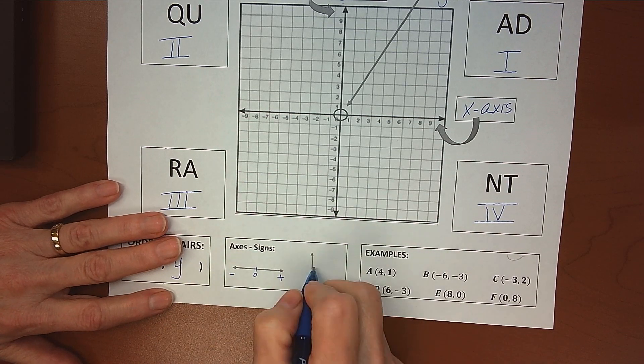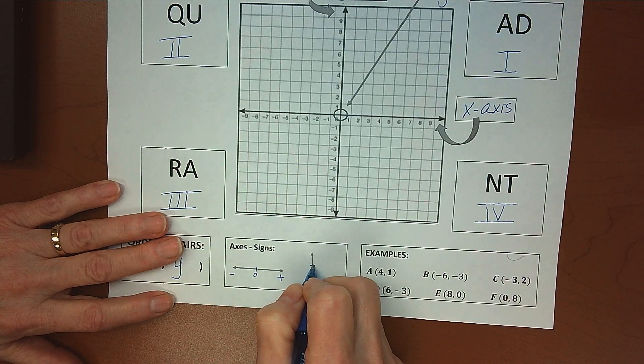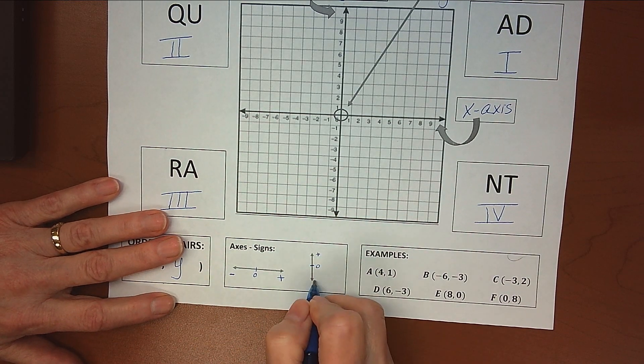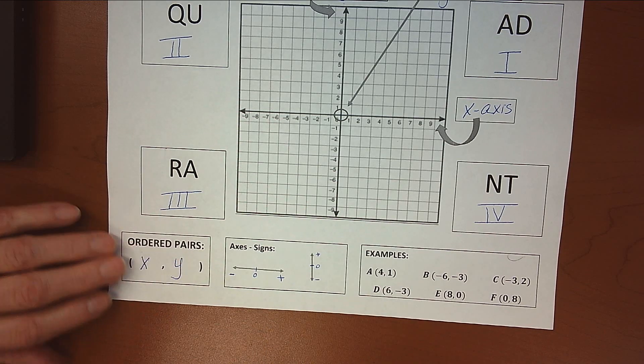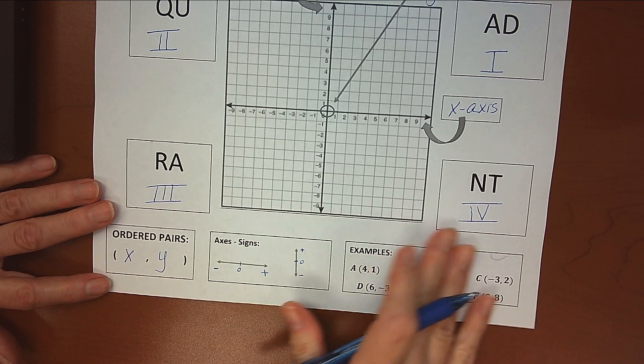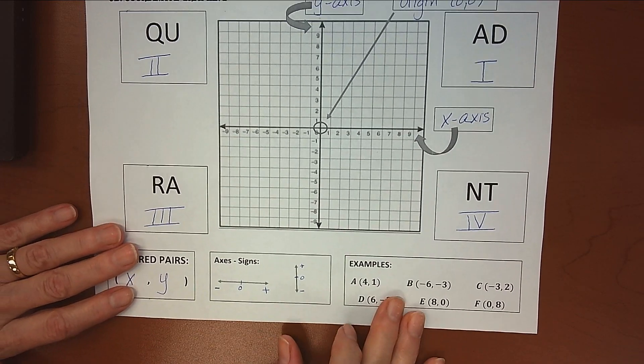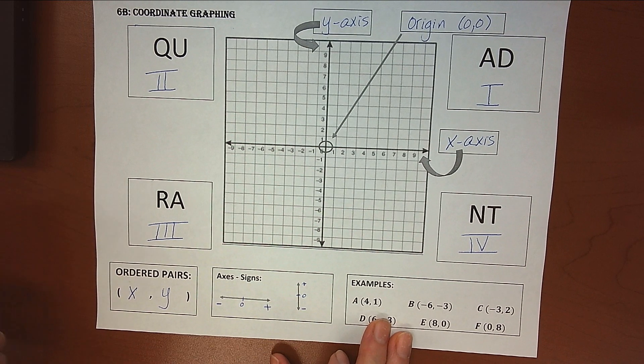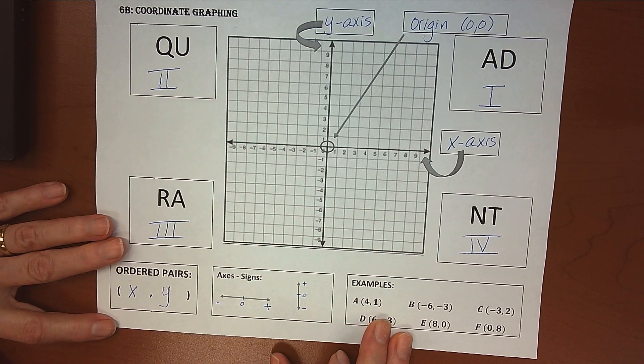On the vertical or y-axis, zero in the middle, positive numbers are going to be above zero, and negative numbers will be below zero. And so given that information, we can tell which quadrants ordered pairs, we call them ordered pairs because they go in a certain order, x first and y second, are going to fall in.